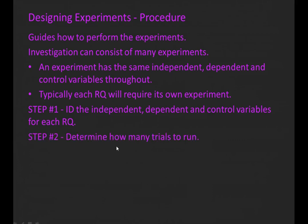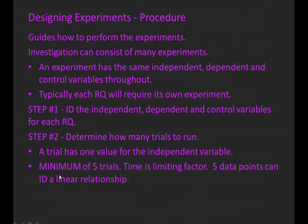Next, we need to determine how many trials to run. A trial has one value for the independent variable. For instance, in our research question the independent variable is velocity, so one value of velocity would be one trial. We want to run a minimum of five trials. Ideally we'd run many more, but time is a limiting factor. We pick a minimum of five trials because five data points can identify a linear relationship, and we'll learn later on why that's something we're after.